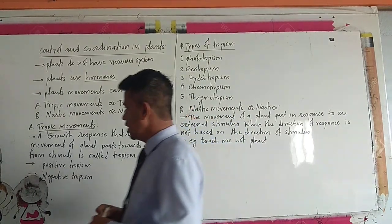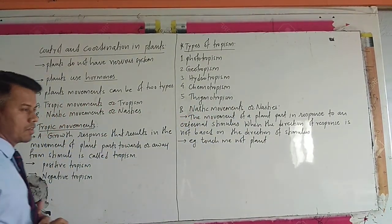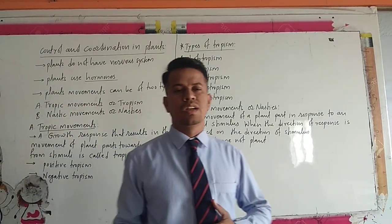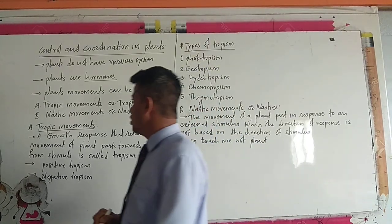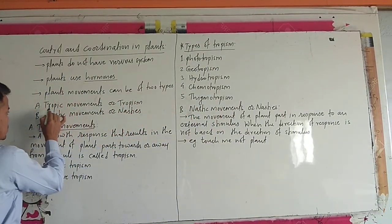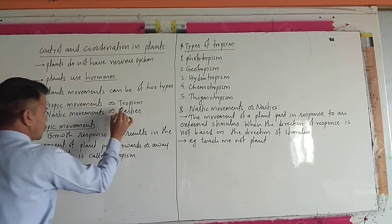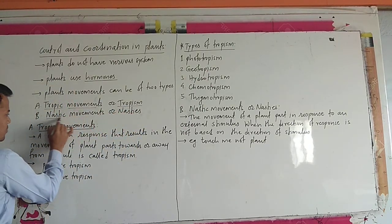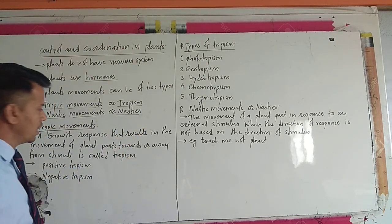Now in a plant's body, we will see two types of movement: one is growth dependent movement and one is growth independent movement. Growth dependent movement is called tropic movement or tropism, and growth independent movement is called nastic movement or nasties.